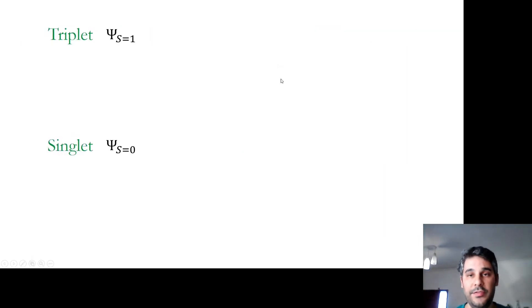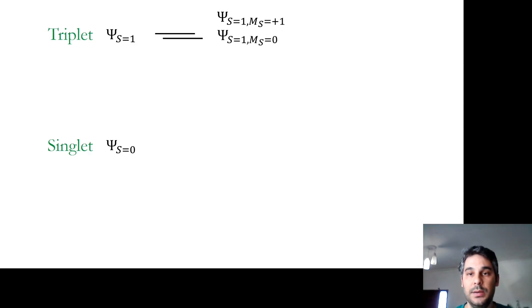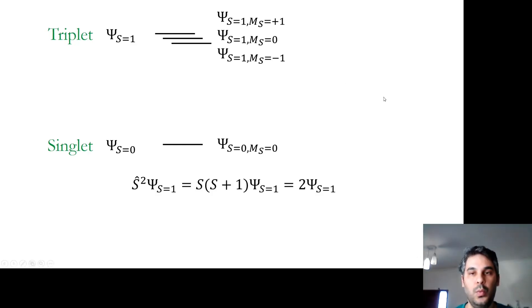Now we are going to focus only on wave functions of two electrons. In this case, we can have two types of wave functions: triplets with total spin S equal to 1, and singlets with total spin S equal to 0. There are three triplet levels with ms equal to +1, 0, and -1, and there is only one singlet state with ms equal to 0.